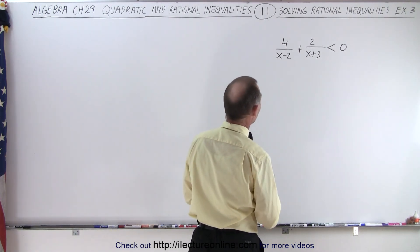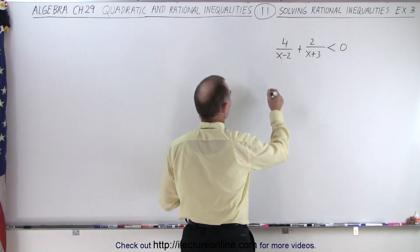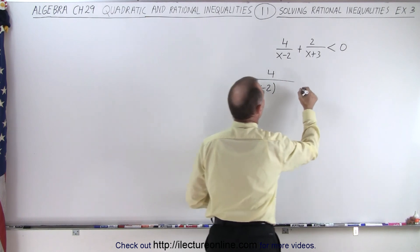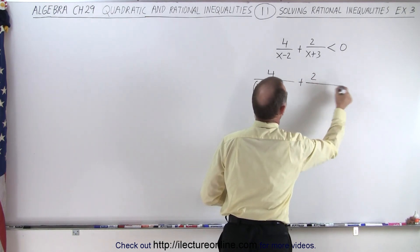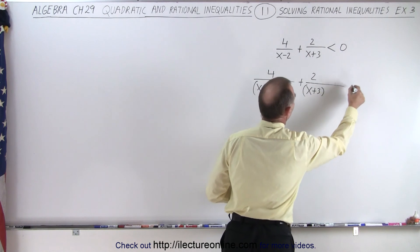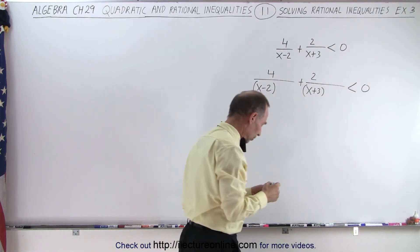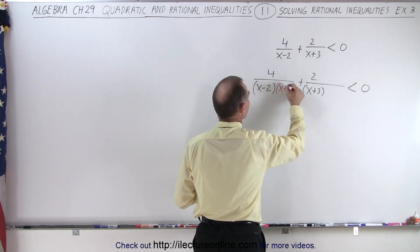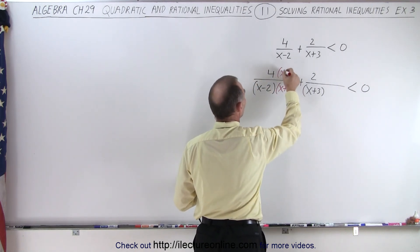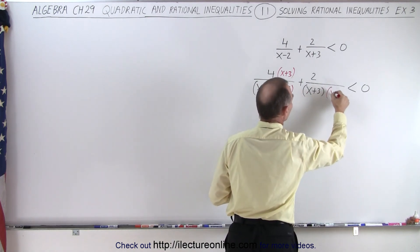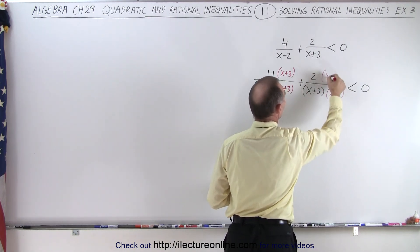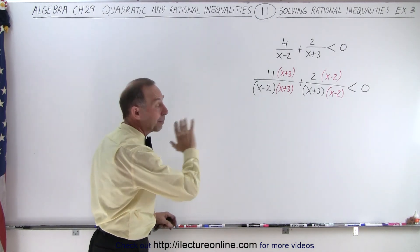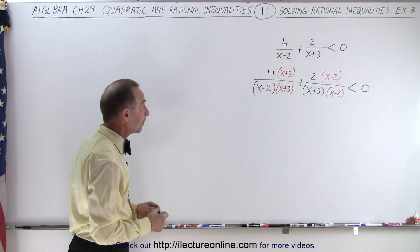To do that, we need to find the common denominator. So this will be written as: 4 divided by (x minus 2), plus 2 divided by (x plus 3), less than 0. Notice we're going to need an (x plus 3) over the first term, so we multiply the numerator by (x plus 3); and we need an (x minus 2) for the second term, so we multiply that numerator by (x minus 2) as well. So now we have a common denominator of (x plus 3) times (x minus 2).